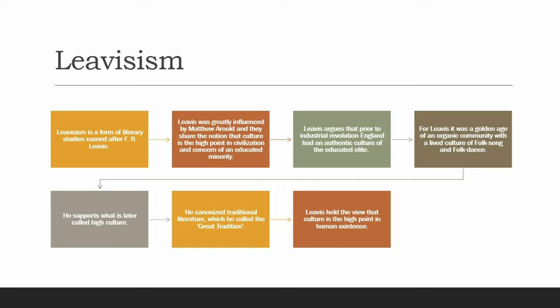In the second phase, Leavis turned his attention to fiction and the novel, producing The Great Tradition in 1948 and D.H. Lawrence: Novelist in 1955. Two of his last publications were The Living Principle: English as a Discipline of Thought (1975) and Thought, Words and Creativity: Art and Thought in Lawrence (1976). He canonized traditional literature, which he called 'the great tradition.' The texts of the great tradition, ranging from Shakespeare to Jane Austen, must be taught in schools and colleges to acquaint students with the social and cultural values of British literature. This argument on behalf of the great tradition of British literature is called Leavisism.